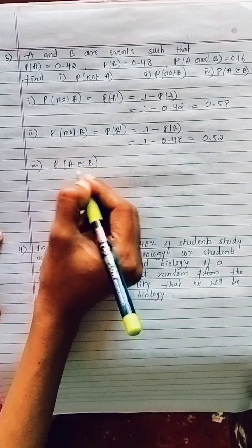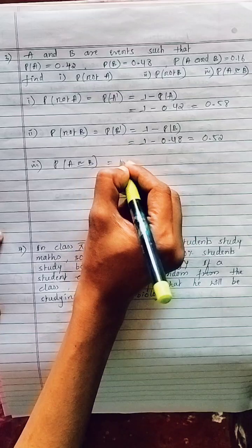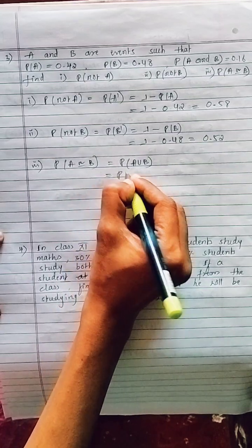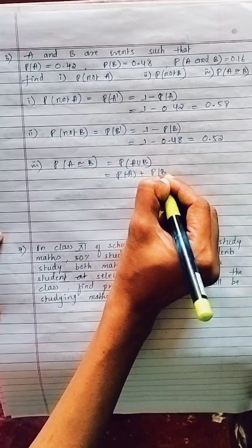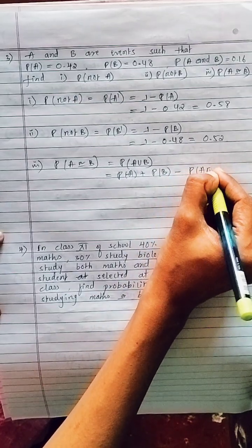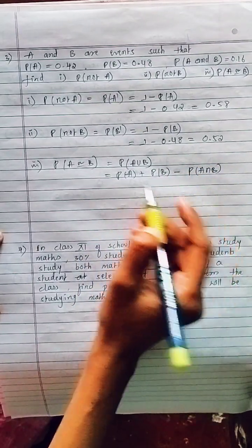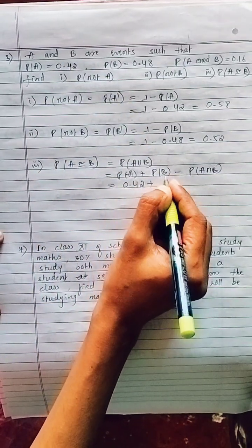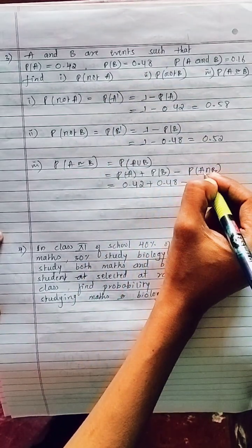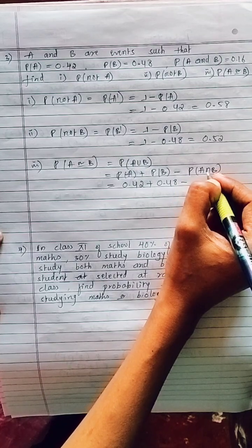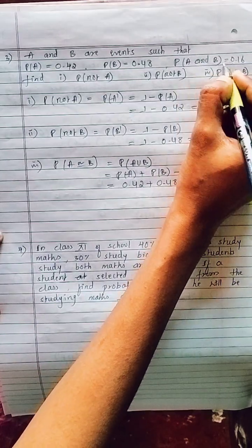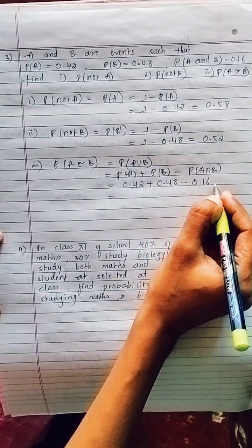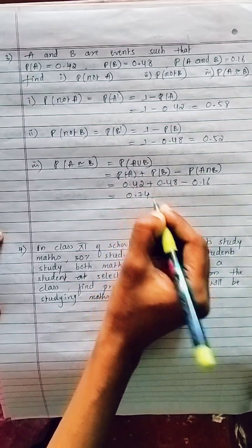Third, P(A or B) = P(A ∪ B) = P(A) + P(B) − P(A ∩ B) = 0.42 + 0.48 − 0.16. Adding 0.42 and 0.48 gives 0.90, then subtracting 0.16 gives 0.74. So P(A ∪ B) = 0.74.